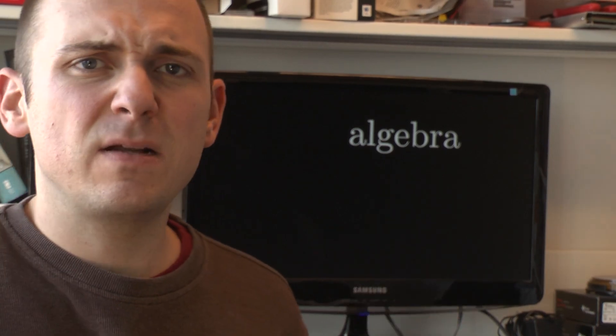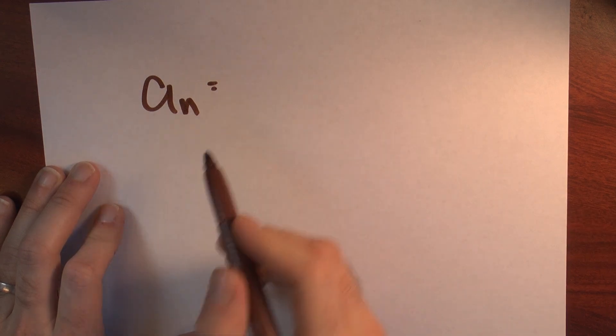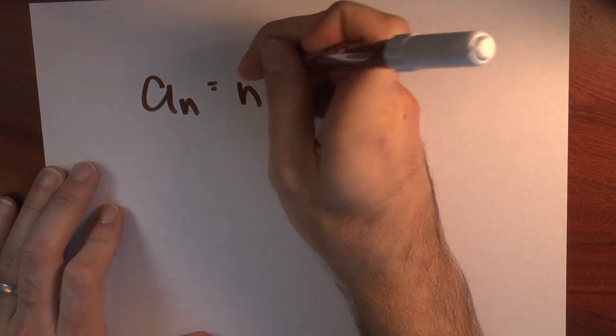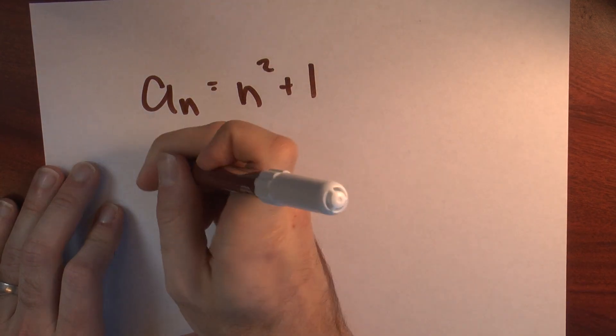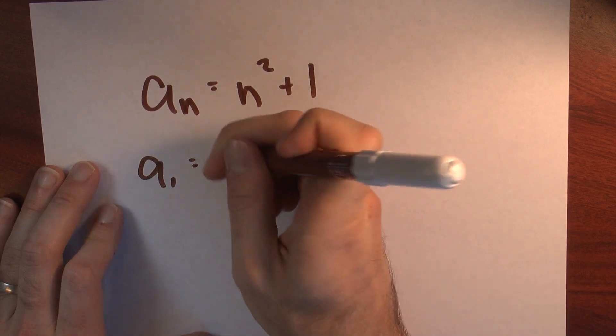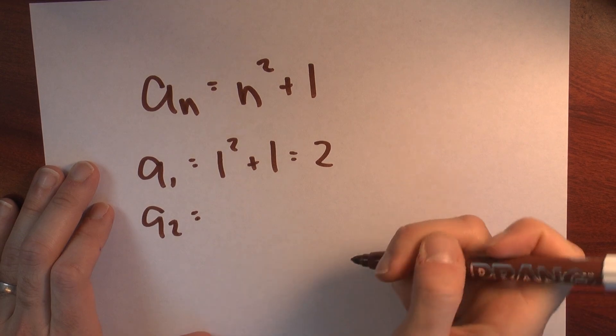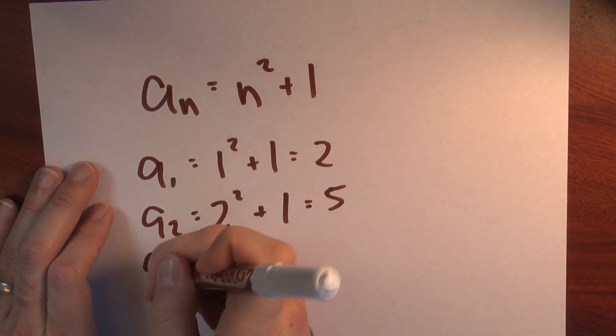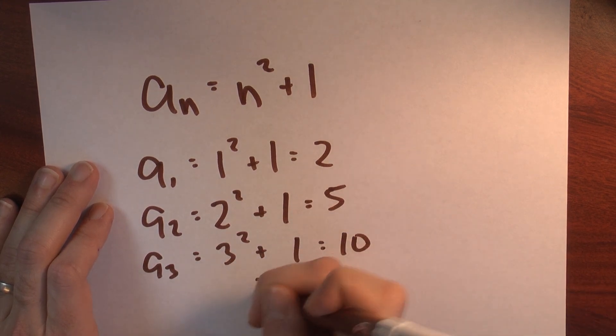I can think about a sequence algebraically. Well, algebraically, I could define a sequence by giving you a rule to compute the nth term. Maybe a sub n is some algebraic formula, like n squared plus 1. In that case, I can just compute the first term is 1 squared plus 1, which is 2. The second term is 2 squared plus 1, which is 5. The third term is 3 squared plus 1, which is 10, and so on.